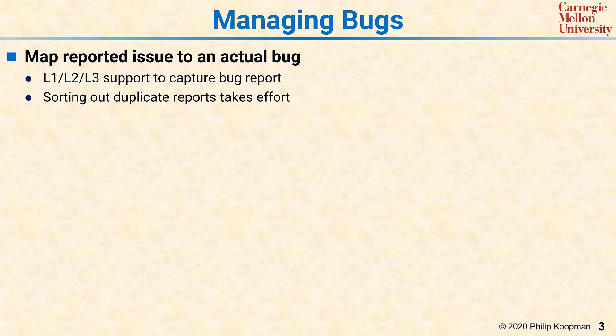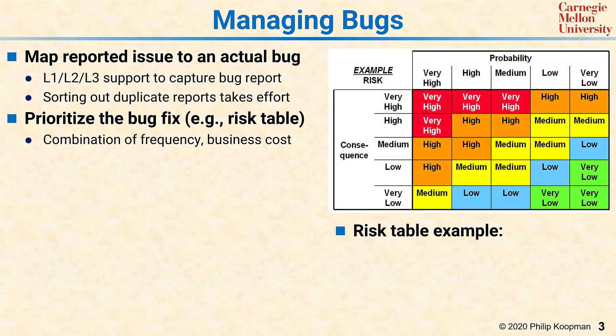Once a bug has been reported, it has to be prioritized. Not all bugs are born equal — some are system killers, some are minor inconveniences, and some are things the software is not intended to do and end up really being a feature request.